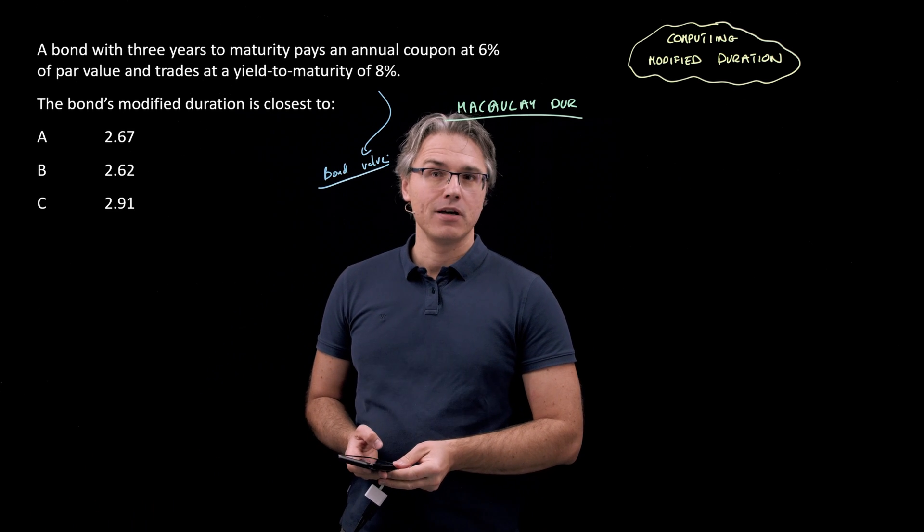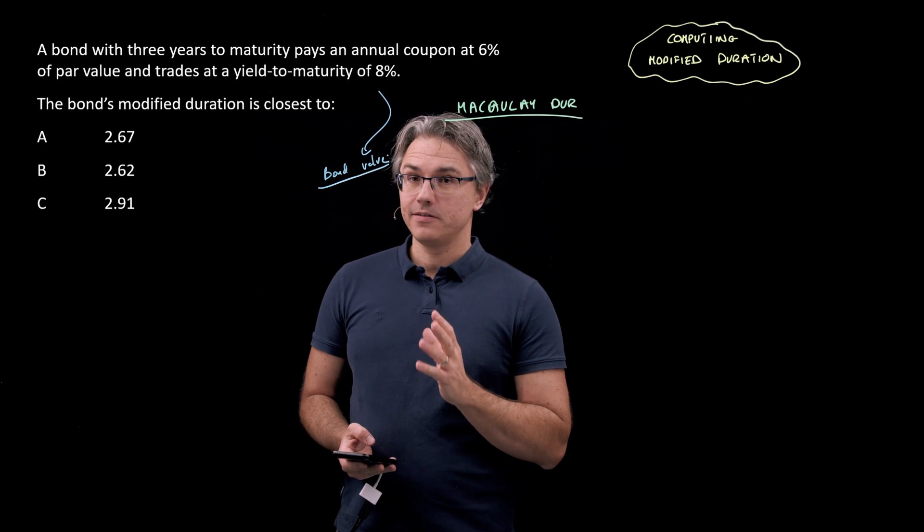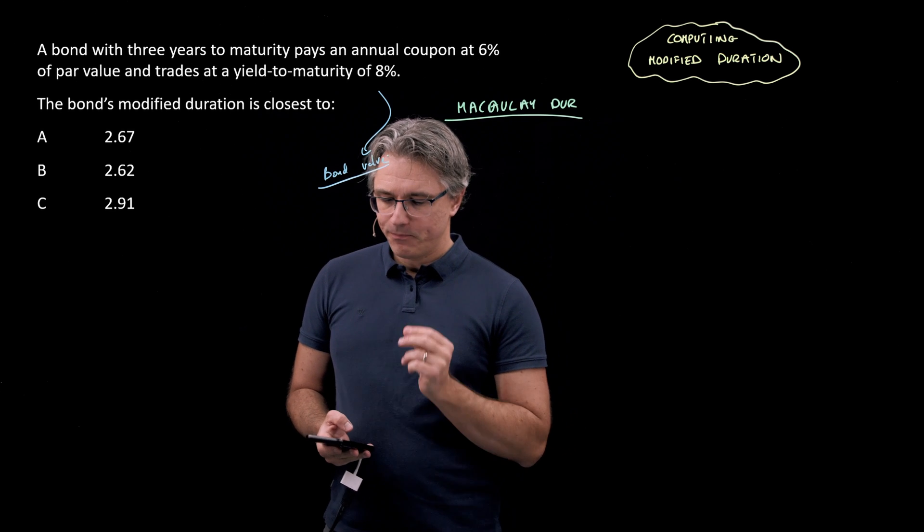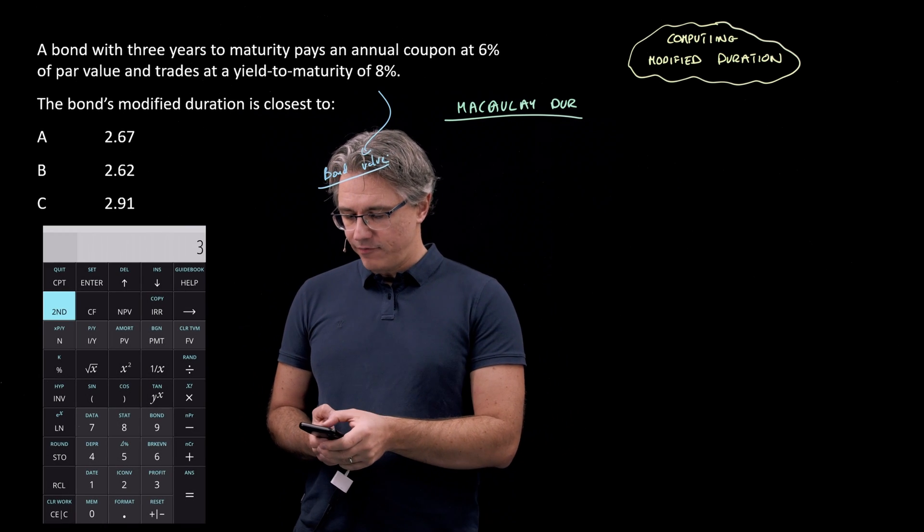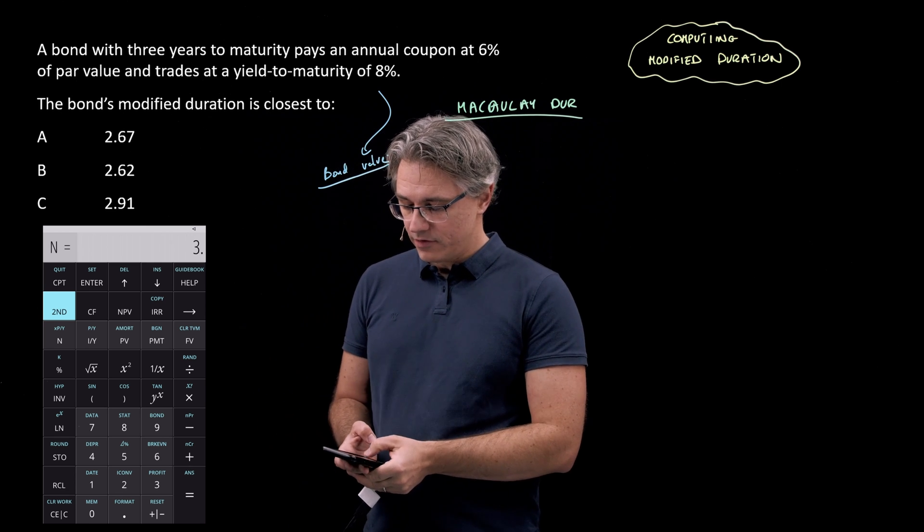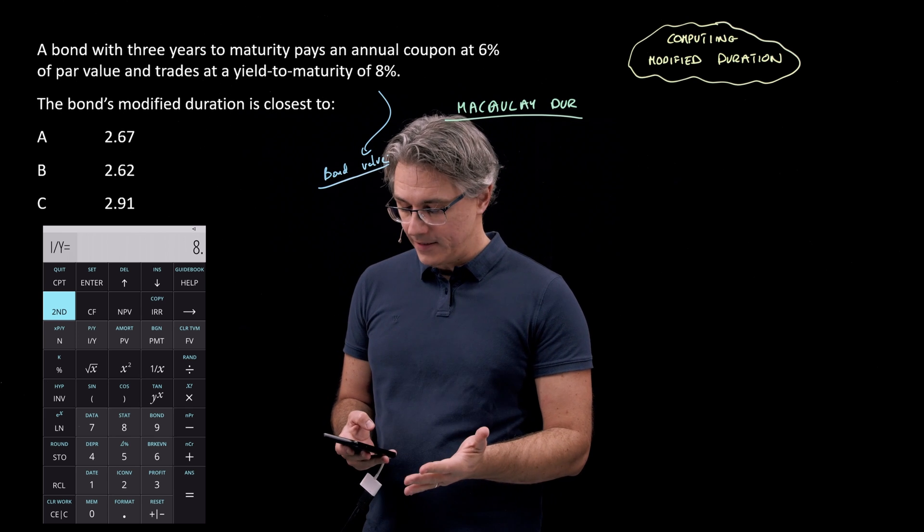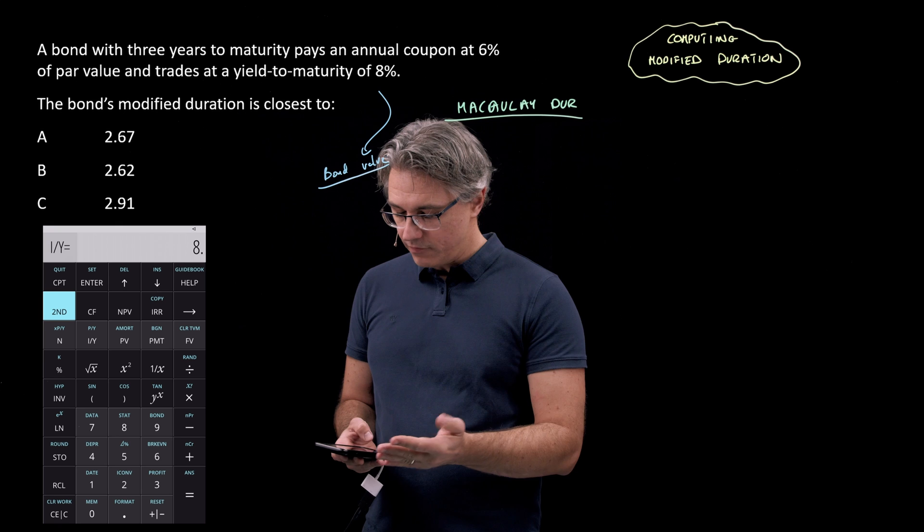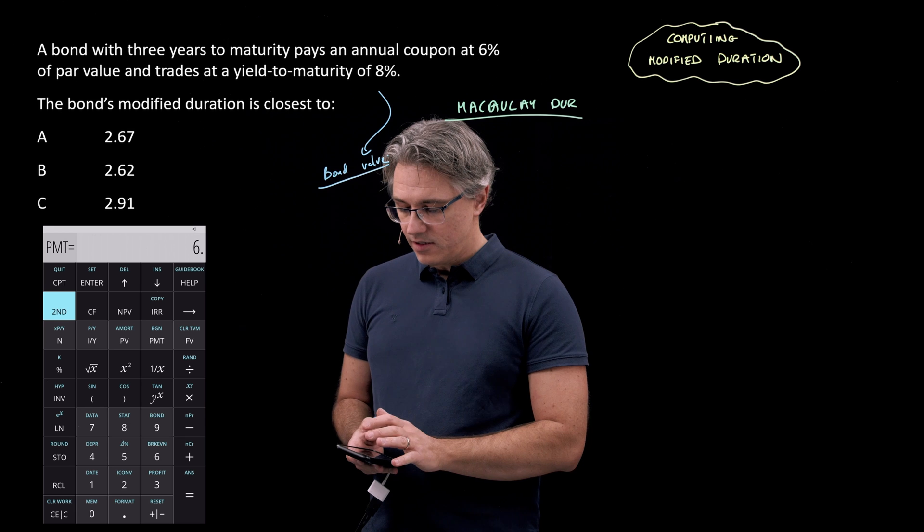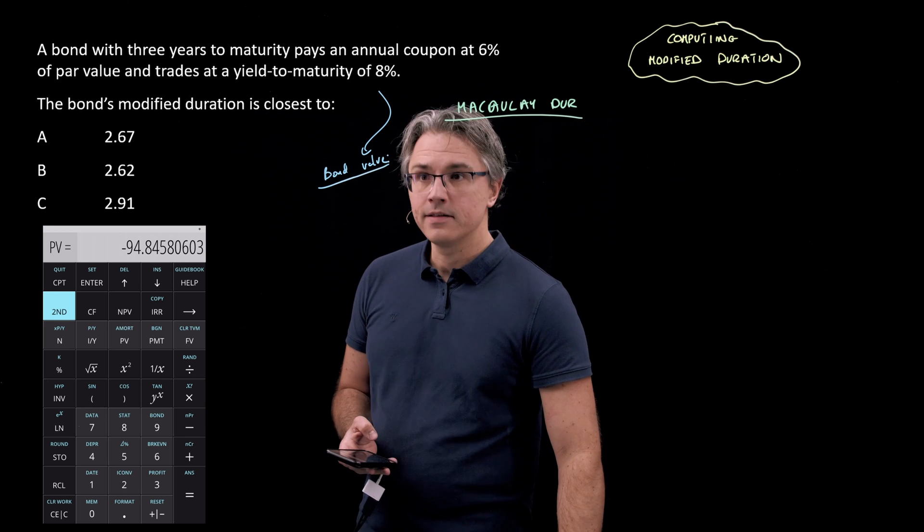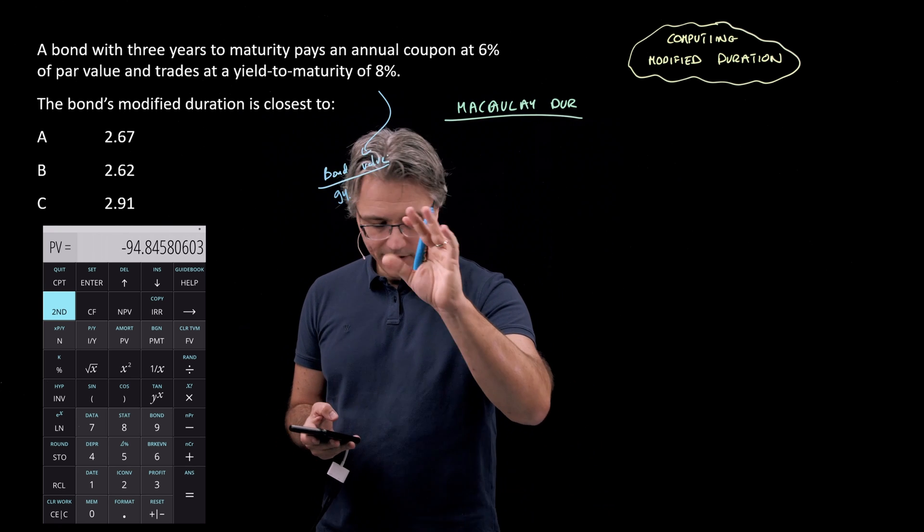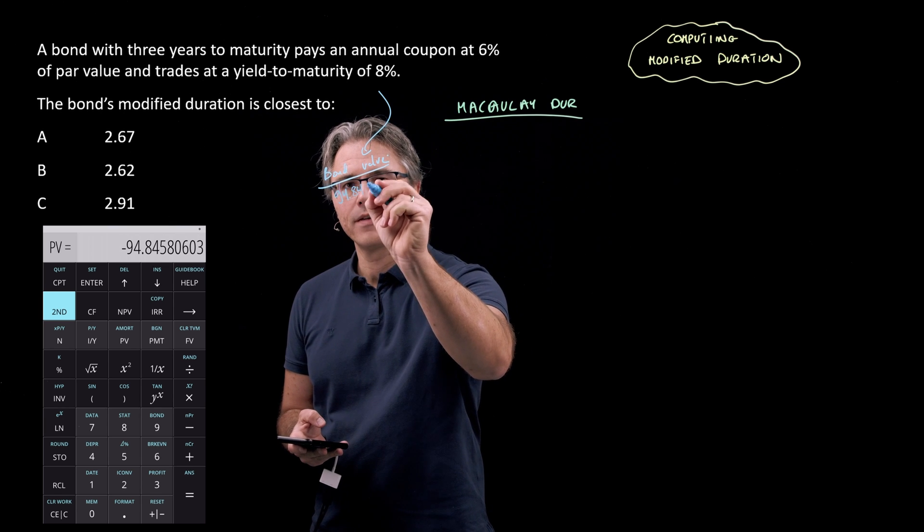So obviously we're going to use the time value of money worksheet making some really quick inputs here. We're looking for PV. The time to maturity is 3 so that's 3 for N. We've got the yield to maturity 8, so I've got 8 followed by I over Y. And now the PV is what we're looking for. 100 is the future value and the coupon is 6. So let's compute PV and I can see that this brings an answer of 94.846 roughly.